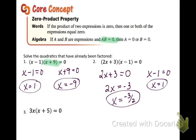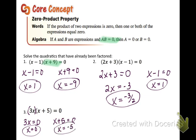For the last one, we don't have parentheses around the first part, but we can put parentheses around the three x. So we are going to take three x, set that equal to zero, and take x plus five and set that equal to zero. For three x equals zero, if we divide both sides by three, we get x equals zero. And on the other one, if we subtract the five over, we get x equals negative five.